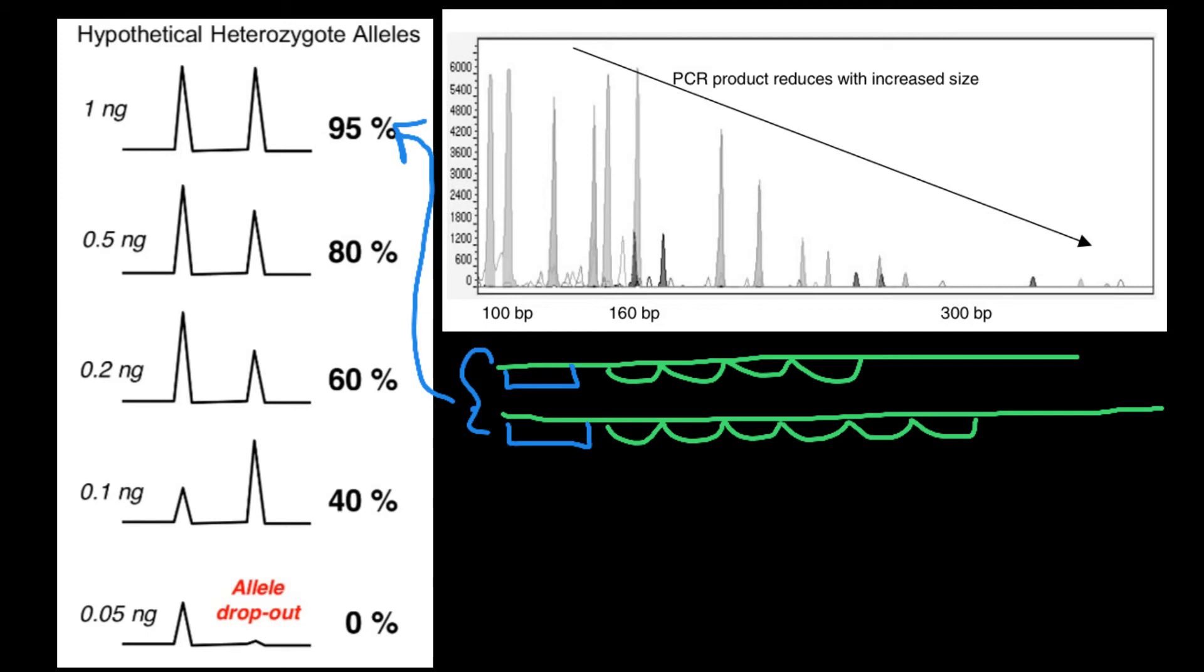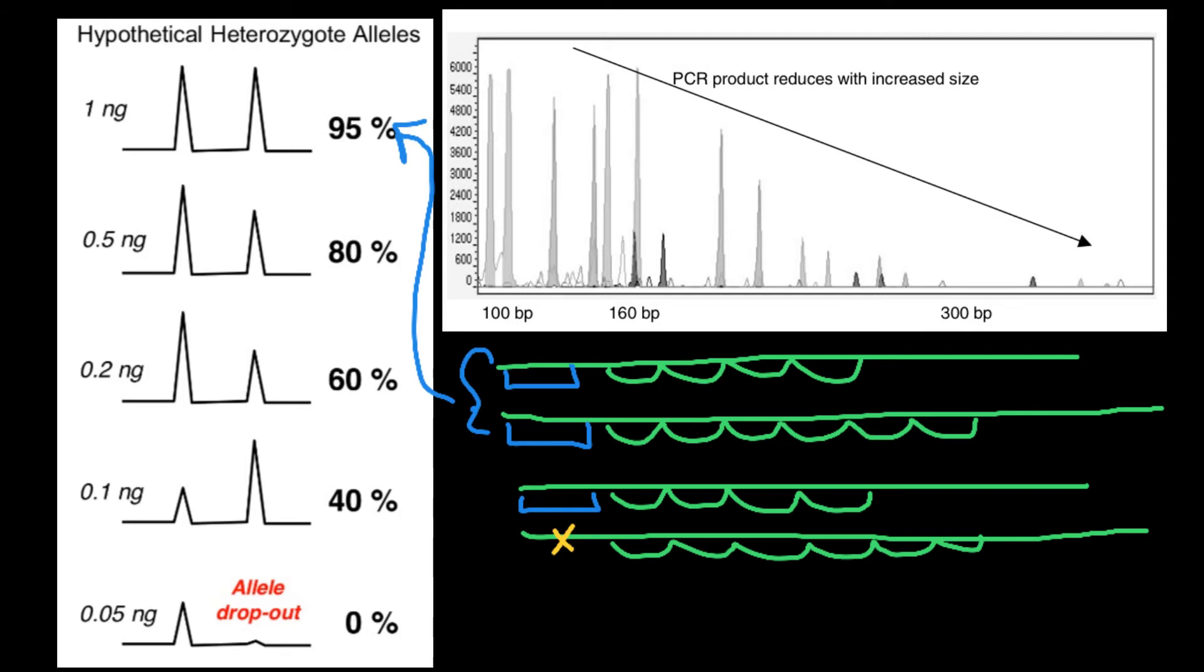Let's take now another case where, once again, we have a locus that is going to be heterozygous. One, two, three, four repeats for one allele. And one, two, three, four, five and six repeats for another allele. But now let's imagine that here, at the site where the primer would attach, we would have a point mutation. So what does it mean? It means that this primer would anneal and would make a good quantity of copies of this type of molecule, this type of allele.